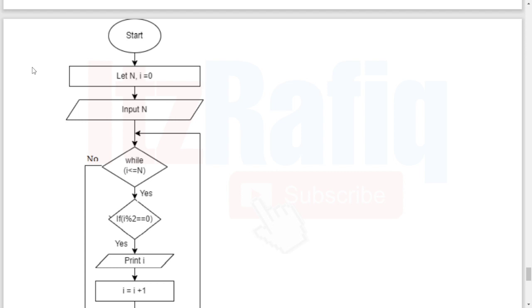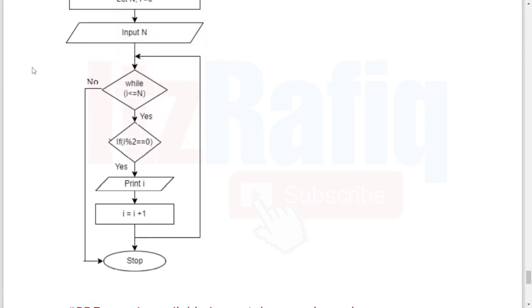The flowchart will be this one: Start, let n, i equal 0, input n, then we'll have while condition i less than or equal to n. If yes, we'll divide the value of i by 2, then print i, again increase the value by 1. We'll repeat it till the condition is true. It will repeat and print all the even numbers. After the condition becomes false, it will stop the program. This is the flowchart of question number G.